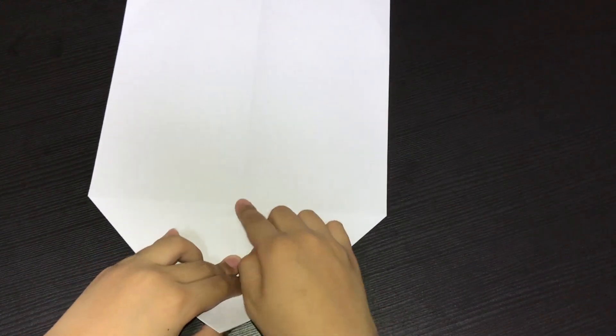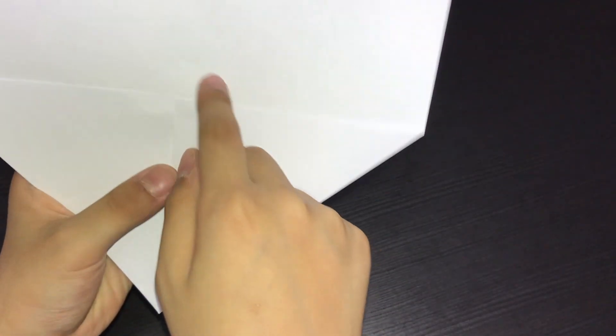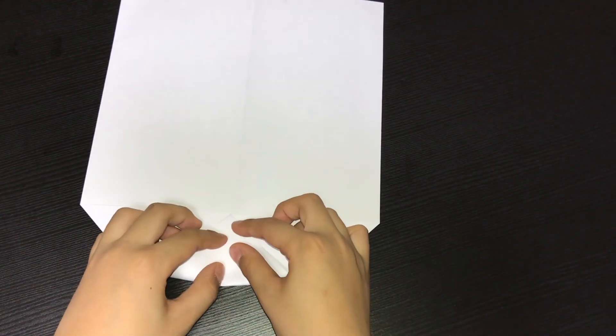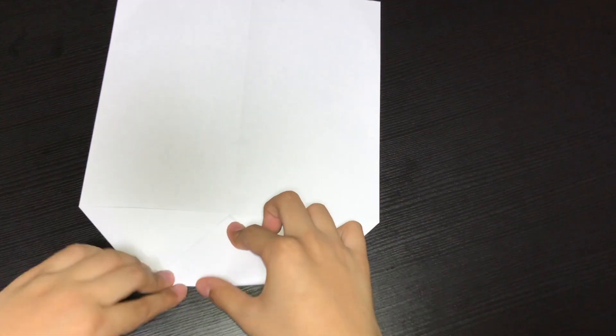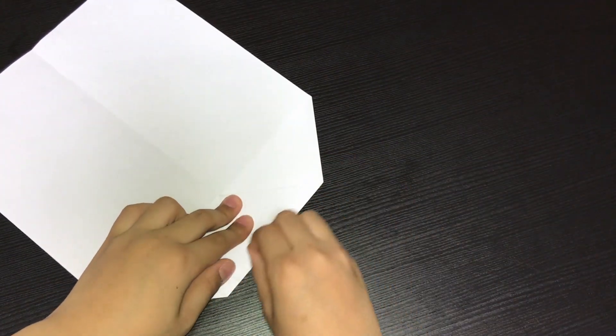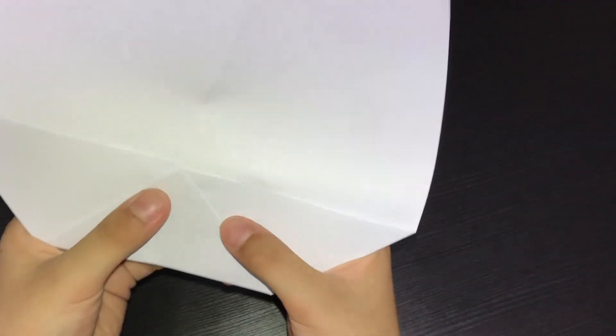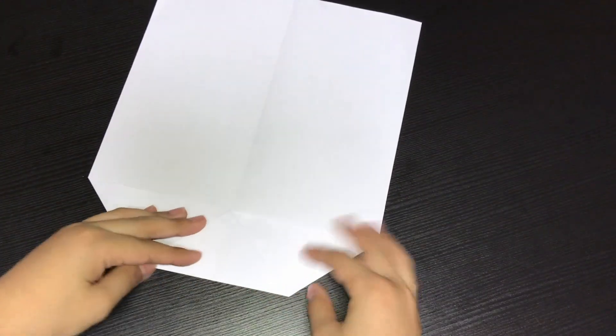Now, fold this edge to the intersection of this line and the crease. So I'm going to put it around here. This will be okay. Make every crease really sharp. And now, turn over.